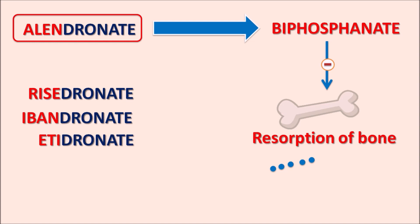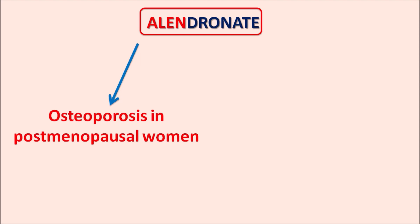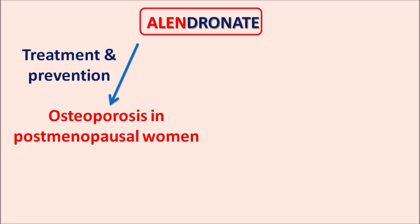In this video we will discuss how alendronate acts, its important precautions, drug interactions, contraindications, side effects, and clinical uses. Alendronate is indicated for osteoporosis in postmenopausal women. In postmenopausal women, estrogen levels are reduced, resulting in demineralization of the bone, decreased bone density, and increased fragility. That's why this drug is useful both in the treatment and prevention of osteoporosis in postmenopausal women.